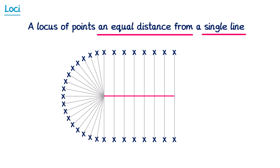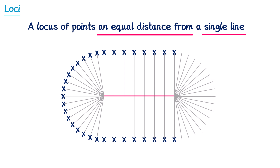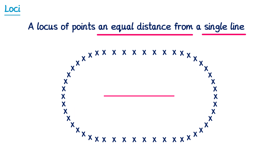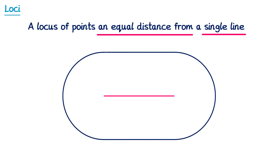Where this locus gets interesting is at the sides. We end up with a semicircle at each end. So all of these points are exactly 4cm away from the red line, forming this shape — the locus of points 4cm away from the line.